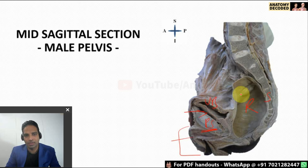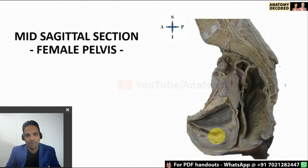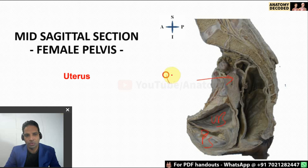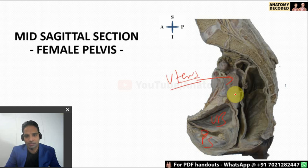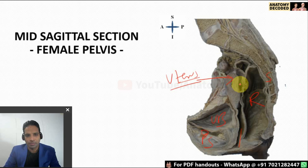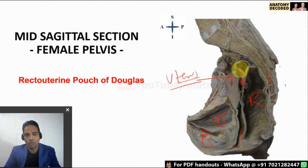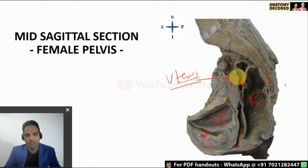In the female pelvis, identify structures from anterior to posterior: the pubic symphysis, the retropubic space, the urinary bladder, and then here the uterus is seen — this is the key identification feature for a female pelvis. Continuing downward, the cervix and vagina are seen, then the rectum, behind which is the sacrum. There is a characteristic fold of peritoneum called the recto-uterine pouch, also called the pouch of Douglas, where fluid collection most frequently occurs — making it clinically very important.